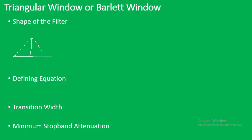The triangular window looks like a triangle — it rises and then falls symmetrically. The length can be from 0 to N minus 1, or it can range from minus (N minus 1)/2 to plus (N minus 1)/2. Depending on this length, the defining equation will change — only the sign of the equation will change.